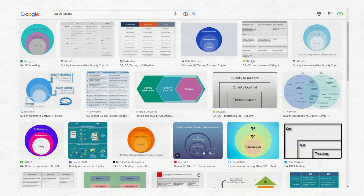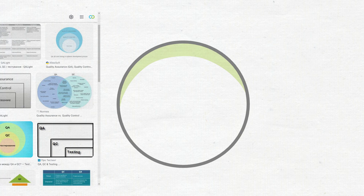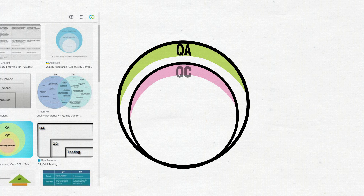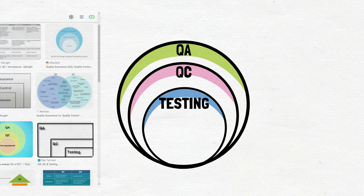It looks like this: QA is the biggest circle, which includes the QC circle, and QC includes testing. So testing is the smallest process and part of both QA and QC. Everybody loves this schema because it proves that our job is not just testing — we are not testers, we are QAs, and we have more responsibilities than just testing. So if you like this explanation, you can go with it.